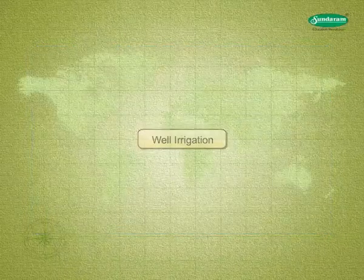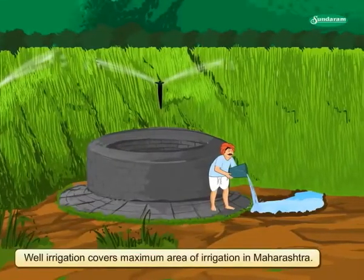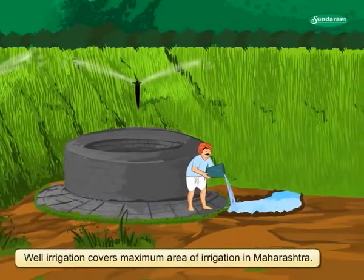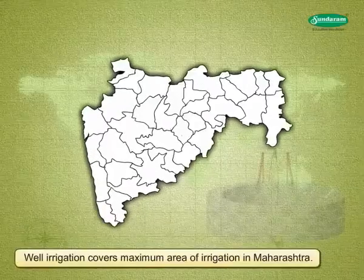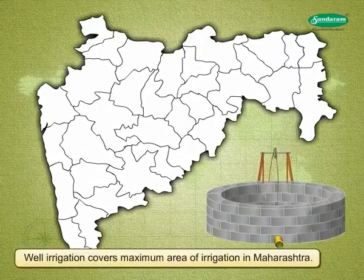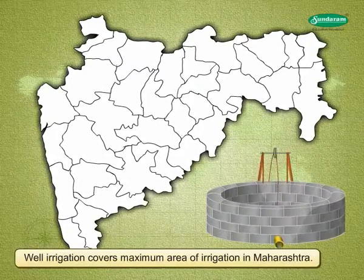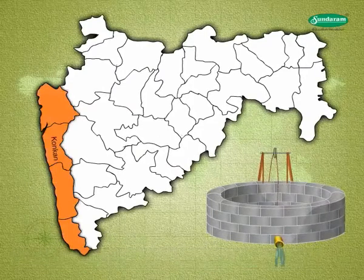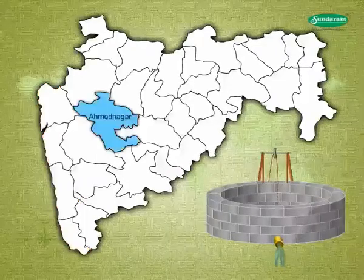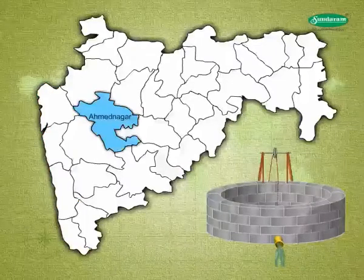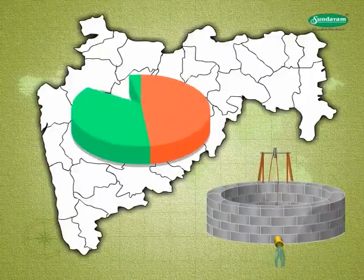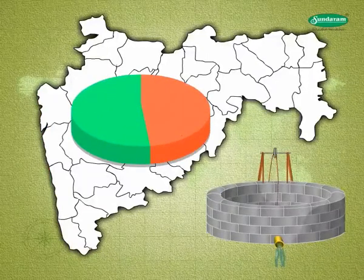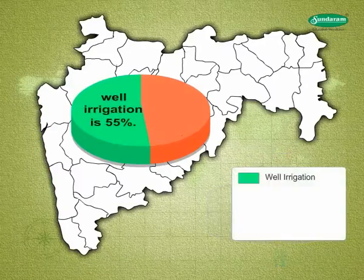Well irrigation is an individual, private and controlled source of irrigation, and it covers the maximum area of irrigation in Maharashtra. In Konkan, very limited area is under well irrigation. In the Ahmadnagar district, a large number of wells are found. Of the total irrigated area, the share of well irrigation is 55%.